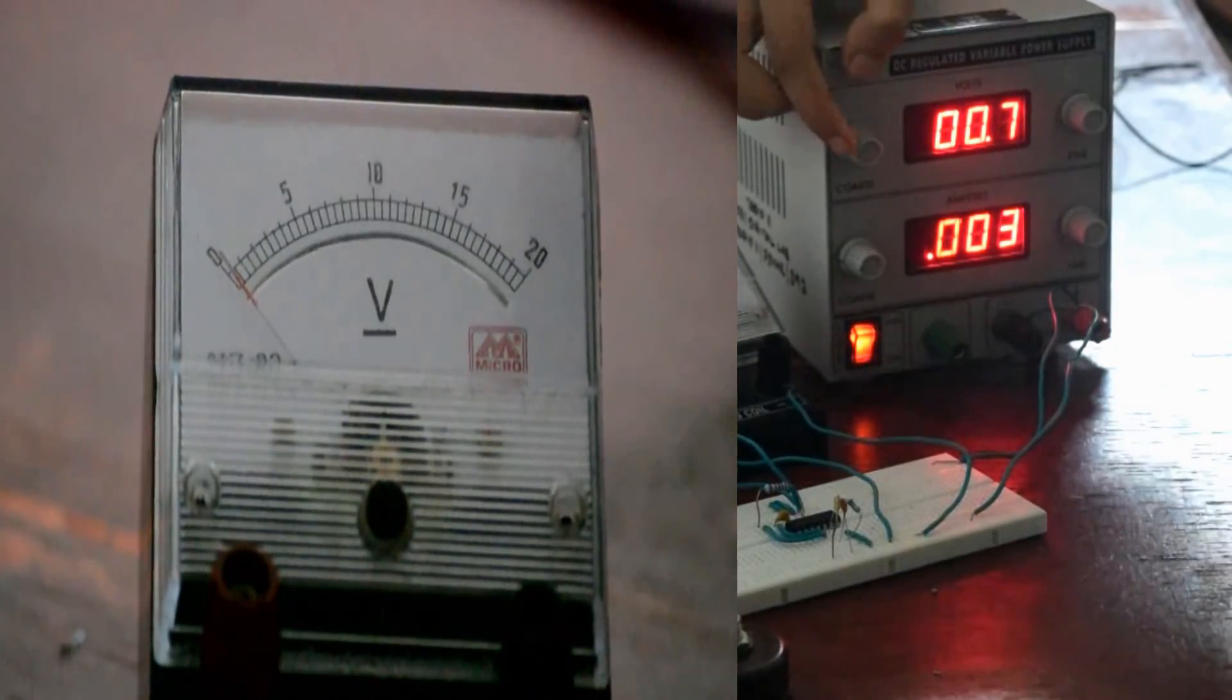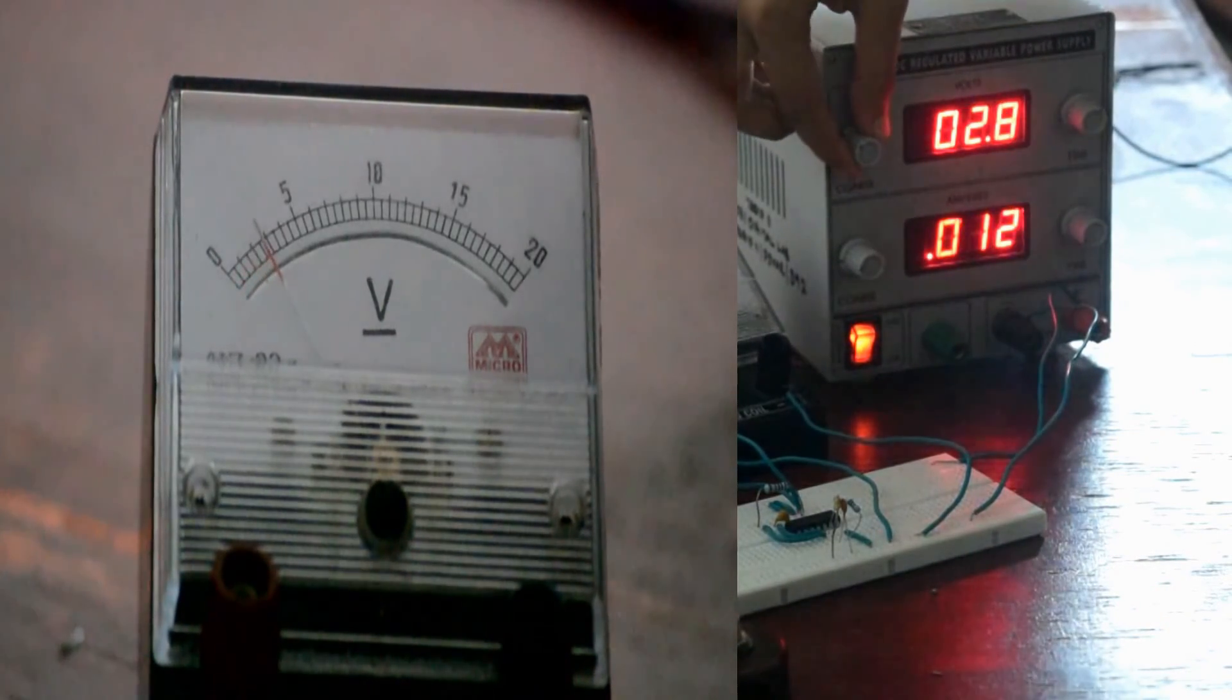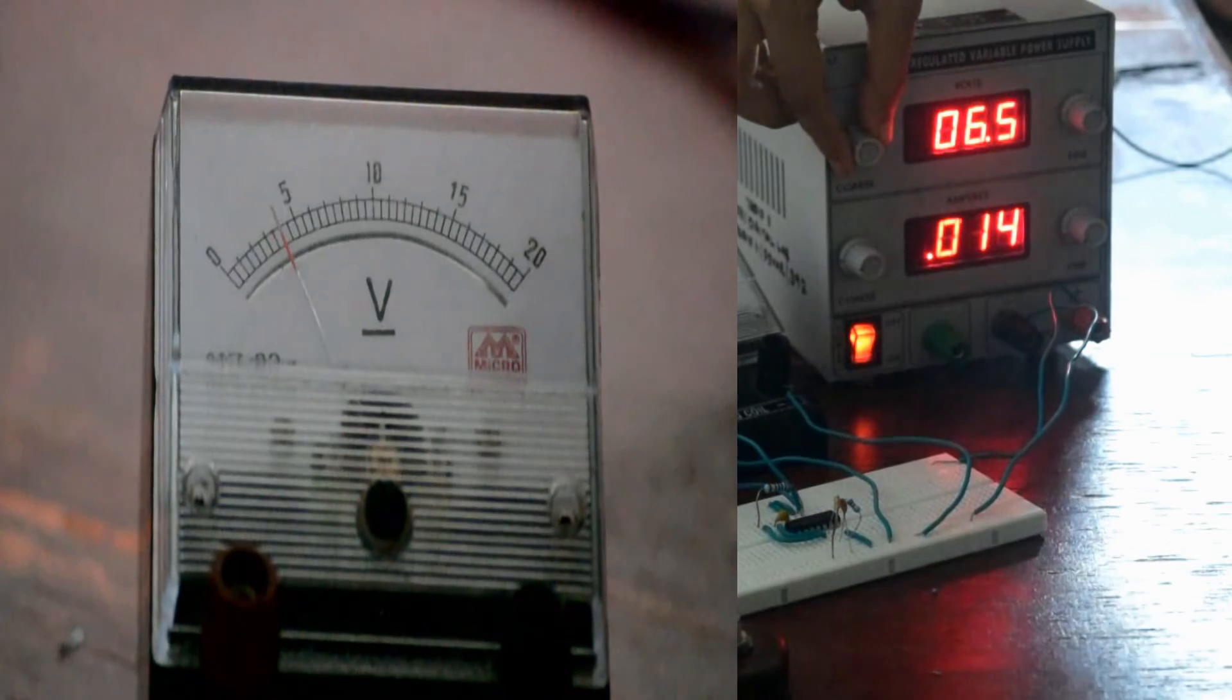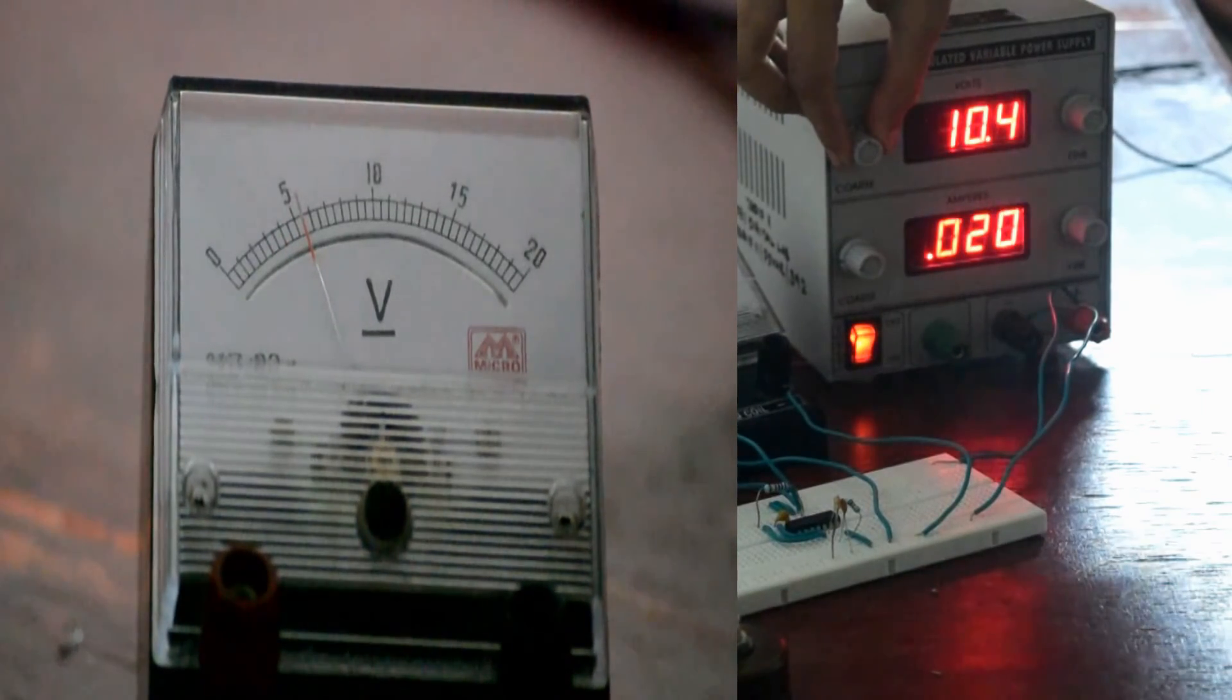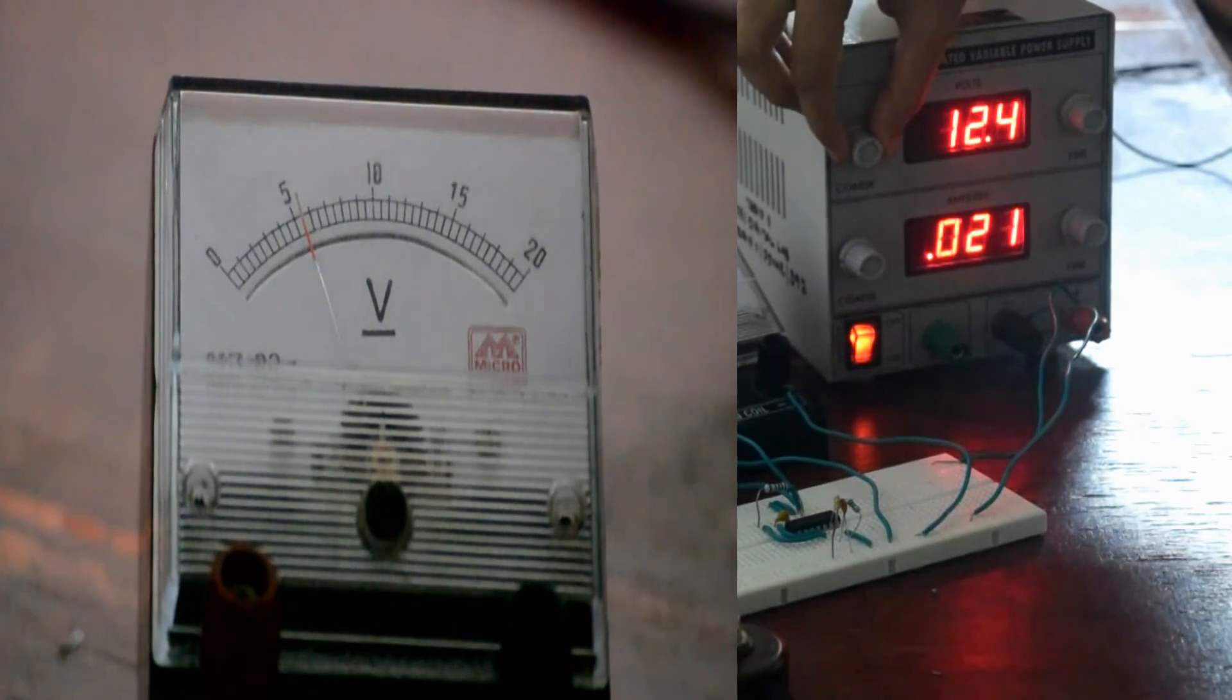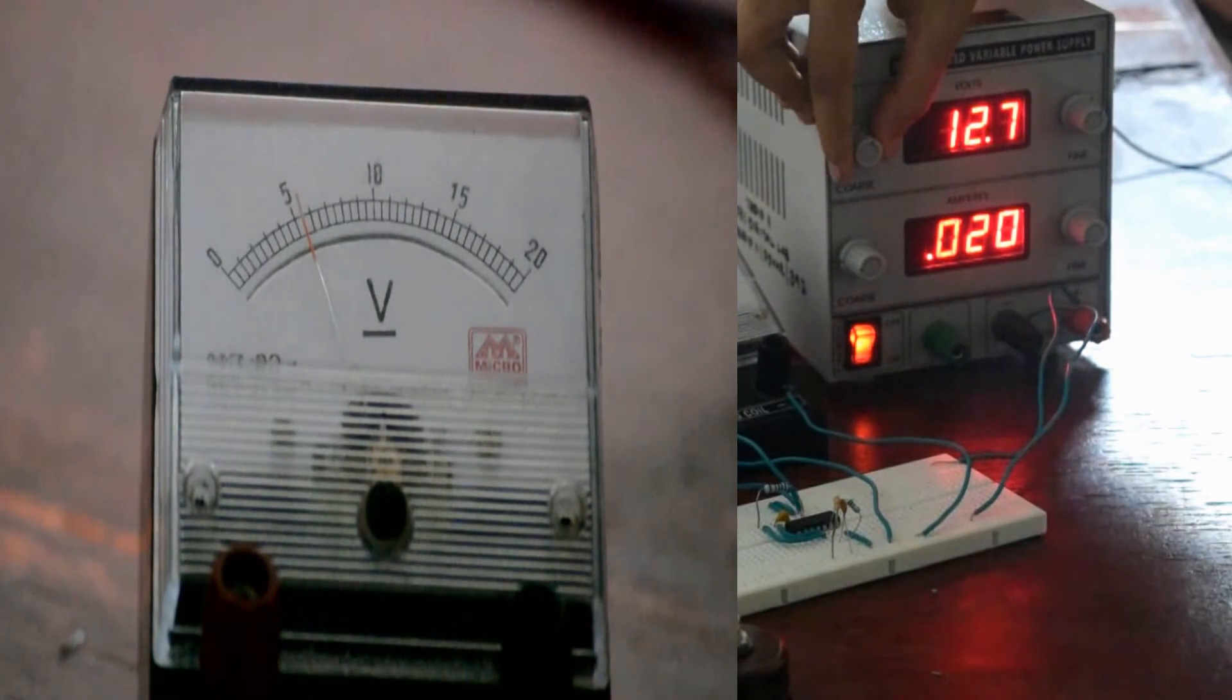Now let's observe the output. We increase the input voltage. We can see the output voltage also increases. And when the input reaches 6V, the output gets regulated. That is, even if we increase the input voltage, the output voltage remains at 6V becoming constant.